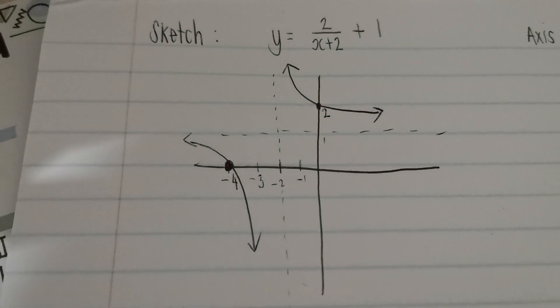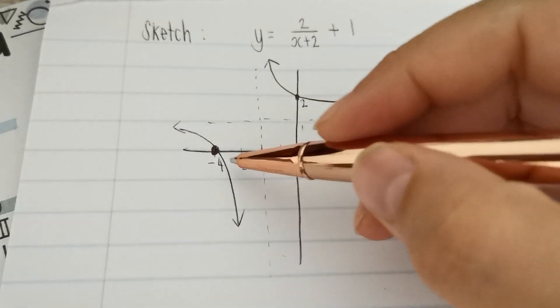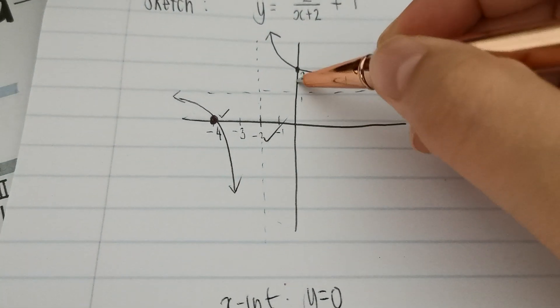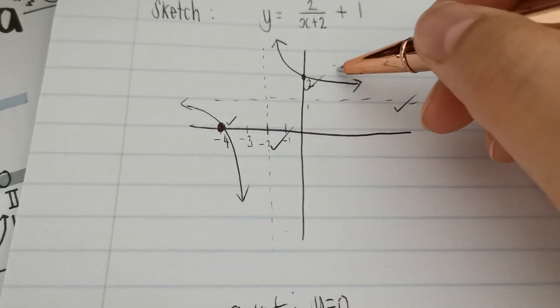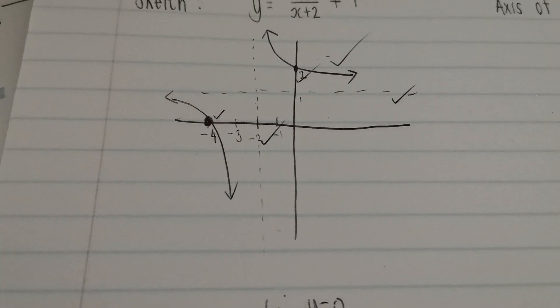When we are marking for you, where are we marking? We're marking that you've got the correct asymptotes. We've marked x and y intercept. And correct shape, meaning the correct quadrants. And that's it. That's how you sketch it.